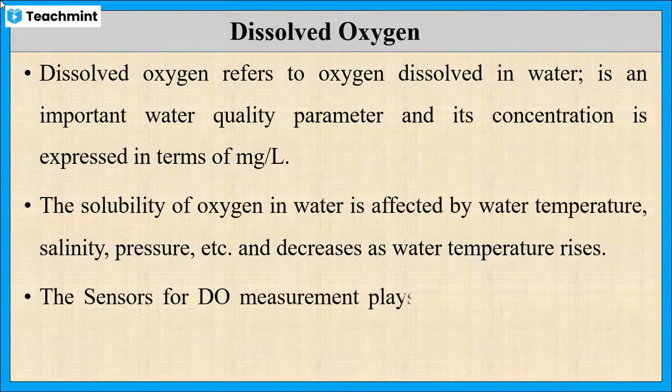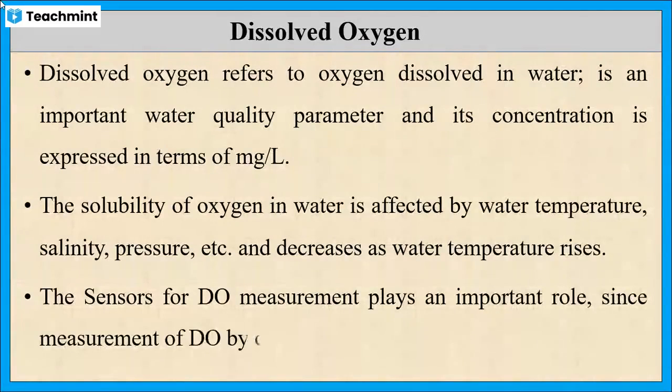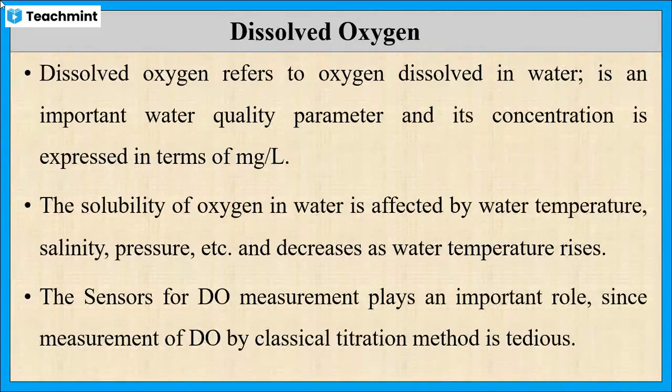There are several methods for measuring the dissolved oxygen including titrimetric, optical methods, and electrochemical methods. As classical titration method is very tedious, electrochemical sensors play an important role for determining the dissolved oxygen.